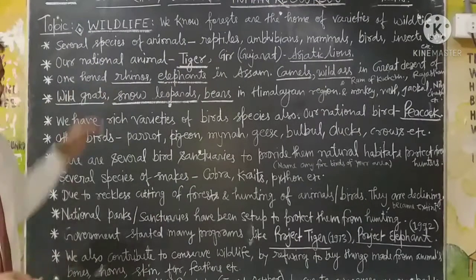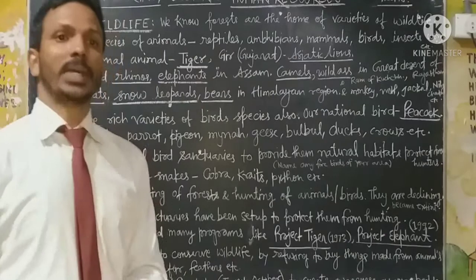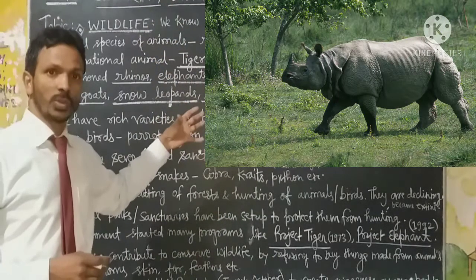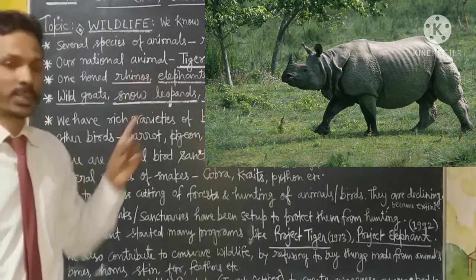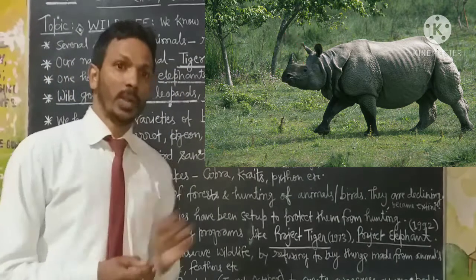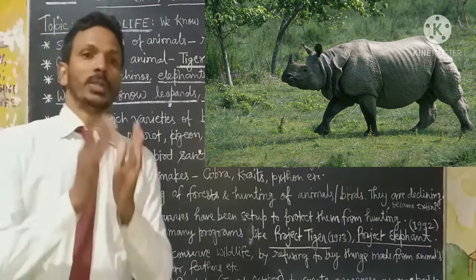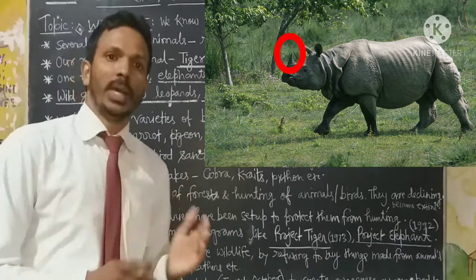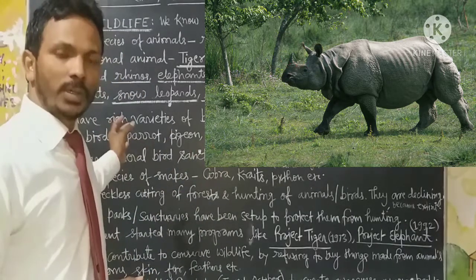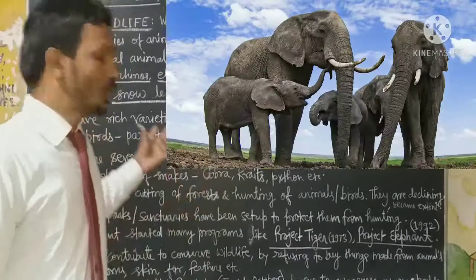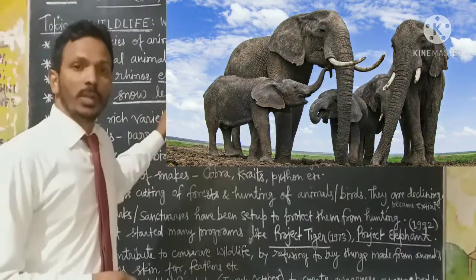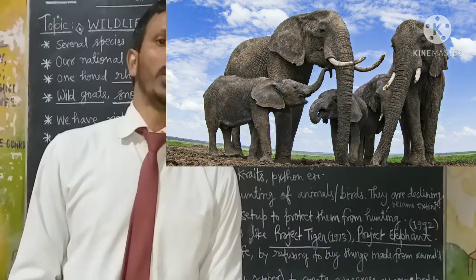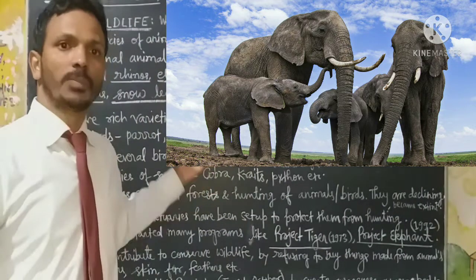Other animals include the one-horned rhino. If you talk about rhinoceros, they are found in Kaziranga National Park of Assam. Apart from one-horned rhinos, we have a species of elephants found in Assam and also found in Kerala and Tamil Nadu and Karnataka in the southern part of the country.